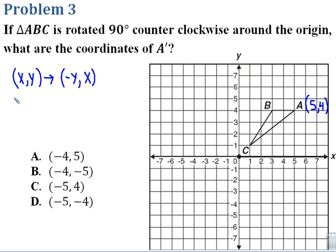So if I have the coordinates 5, 4, that's going to change to negative 4. So we move the y-coordinate first and make it negative, comma, 5.